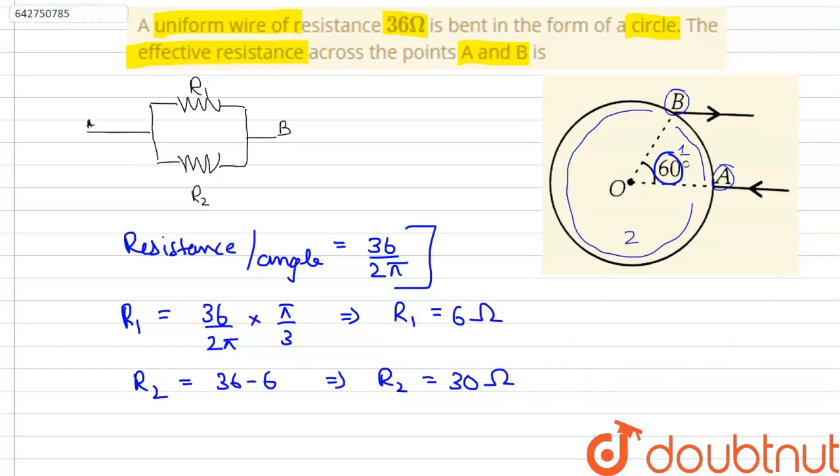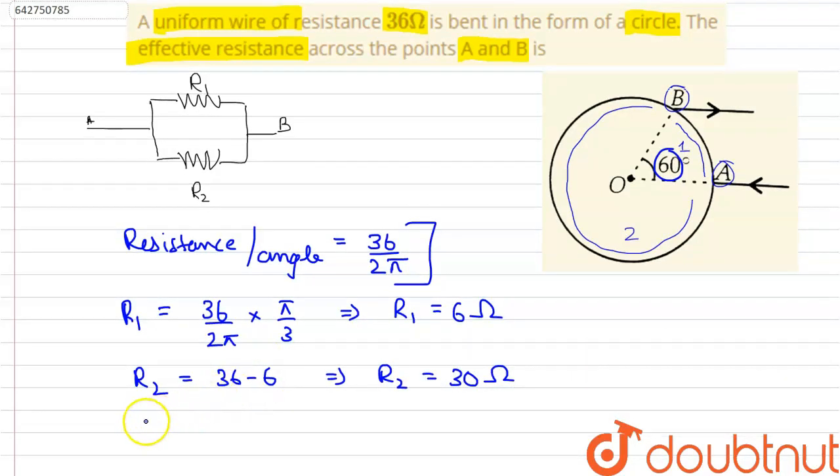Therefore, to calculate the equivalent resistance, we need to use a formula which is 1 by R equivalent is equal to 1 by R1 plus 1 by R2.